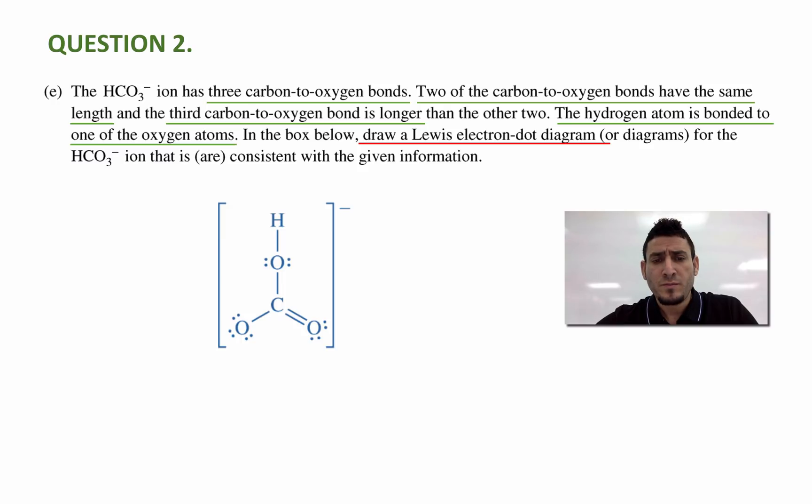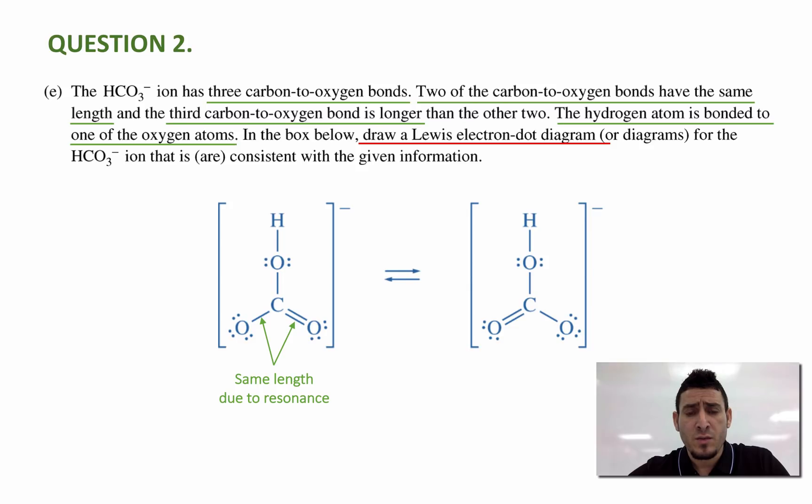Now, the Lewis electron dot is the following. The two bonds that are equal for between carbon and oxygen are these two. Now, the reason they're equal, because we have resonance, and since we have resonance, we can draw the hybrid form, and in the hybrid form, these two bonds, since the double bond, once is to the left and another time is to the right, so these two bonds are considered to be the same. Now, the third bond, which is longer than these two bonds, is the single bond between carbon and oxygen, and on that oxygen that's connected to the hydrogen.